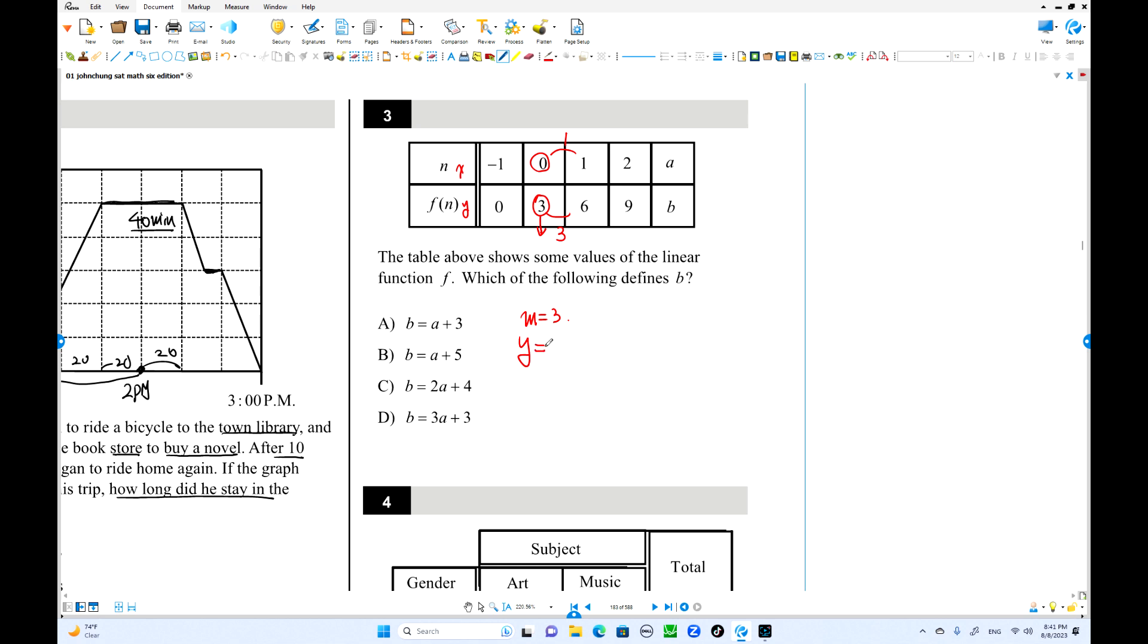Where is Y intercept? When X equals 0, this is 3, Y intercept. So the equation is Y equals 3X plus 3, right? This is Y. This is F of N. This is N. I want this one. F of N equals 3N plus 3. But put this one A and B there. This is B. This is A, right? So B equals 3A plus 3. That's the equation.